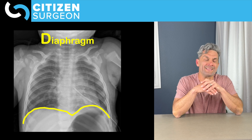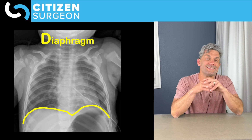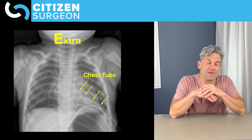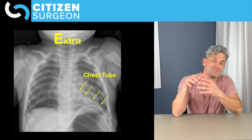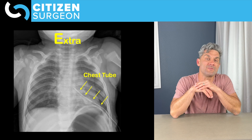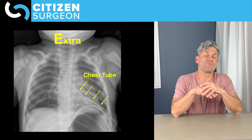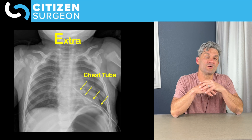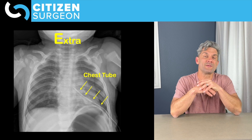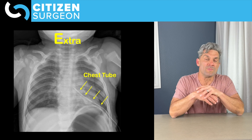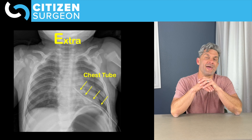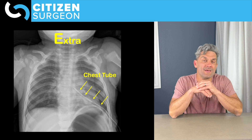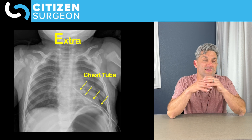That puts us to E — E is external stuff. In this x-ray right here, you can see we've got some external stuff: we have a chest tube. I'm going to be looking for external lines, chest leads, the chest tube — all the different things that are not part of the human body that could be on the chest. That's E.